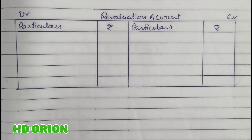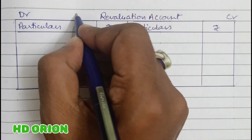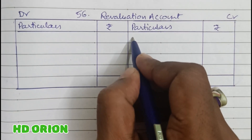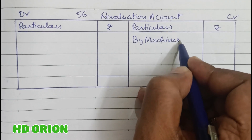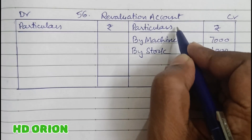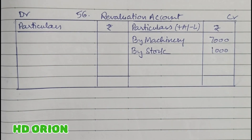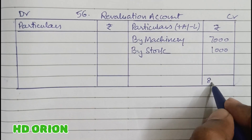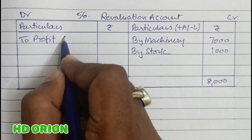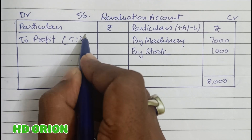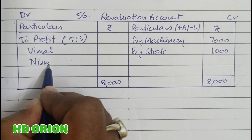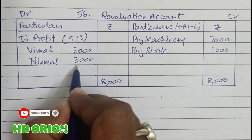In the solution for question 56, we prepare the revaluation account. Machinery is increasing by rupees 7,000, and stock is also increasing by rupees 1,000. Increase in asset is recorded on the credit side of the revaluation account. This gives a credit balance, meaning there is a profit on revaluation, which will be given to old partners in their profit sharing ratio of 5 to 3 — so rupees 5,000 goes to Vimal and rupees 3,000 goes to Nirmal.